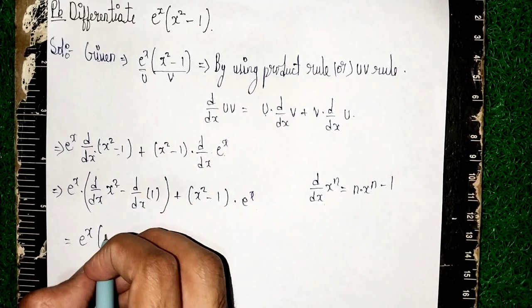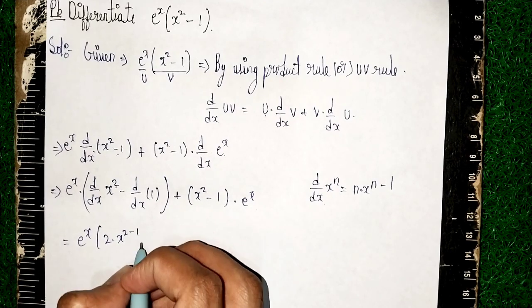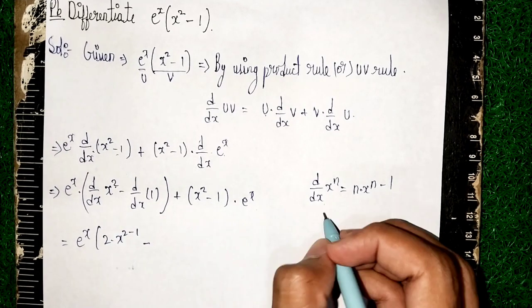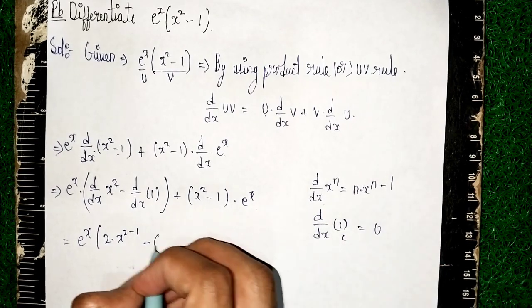So n is what? 2. So 2 into x^(2-1). In the power we are deducting minus 1. Then minus, d/dx of any constant or 1 is equal to 0.